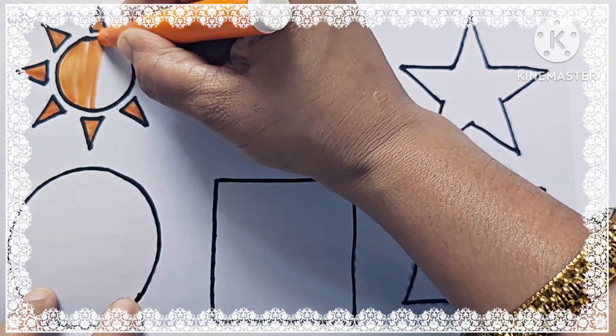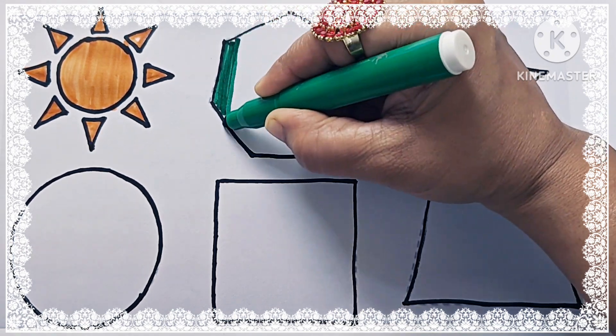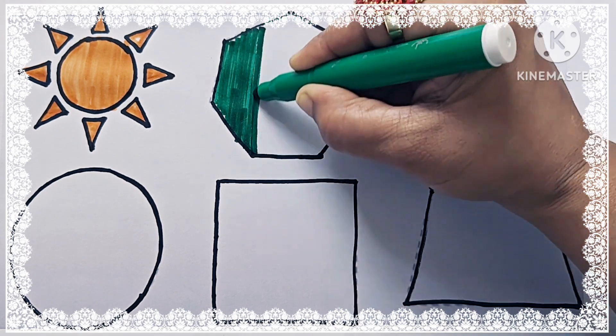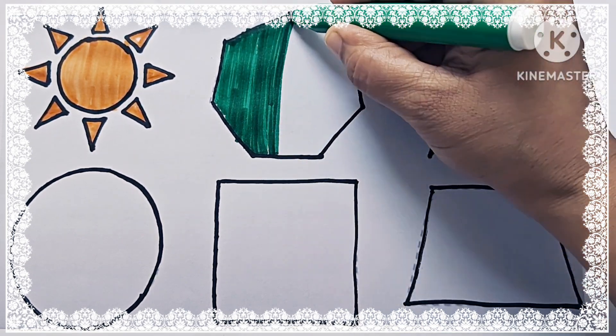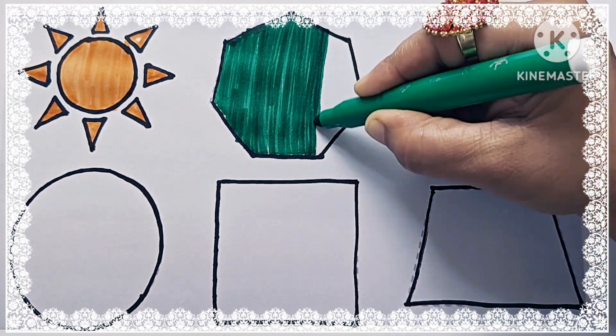Shape is sun. Color is green. And shape is heptagon. Heptagon has 7 sides. Green color heptagon.